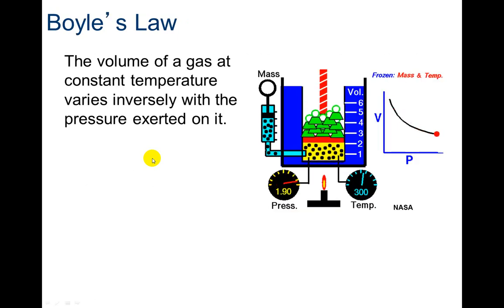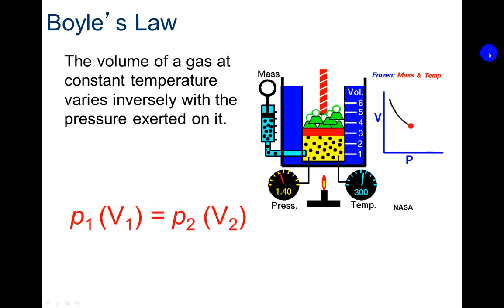Here's Boyle's Law. When we increase the pressure, right here, we increase the pressure, my volume is going to go down. So the volume of gas at a constant temperature, notice this is assuming that we have a constant temperature, is going to vary inversely with the pressure. This is what the equation looks like: P1 times V1 equals P2 times V2.